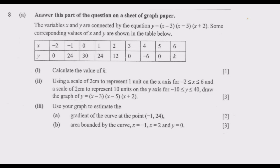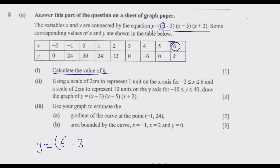To calculate the value of k, we substitute x equals 6 into the equation wherever there is x. So y equals (6 minus 3) multiplied by (6 minus 5) multiplied by (6 plus 2). Note that wherever there is x we are putting the value 6, because the value of x in this case is 6.